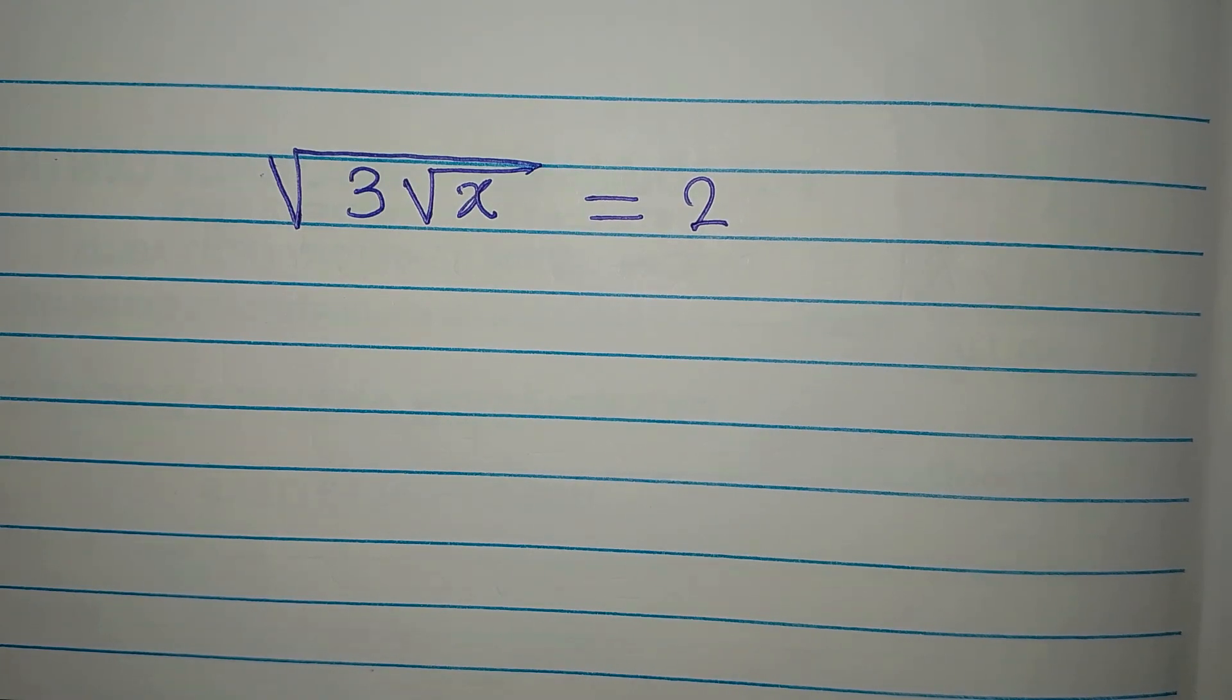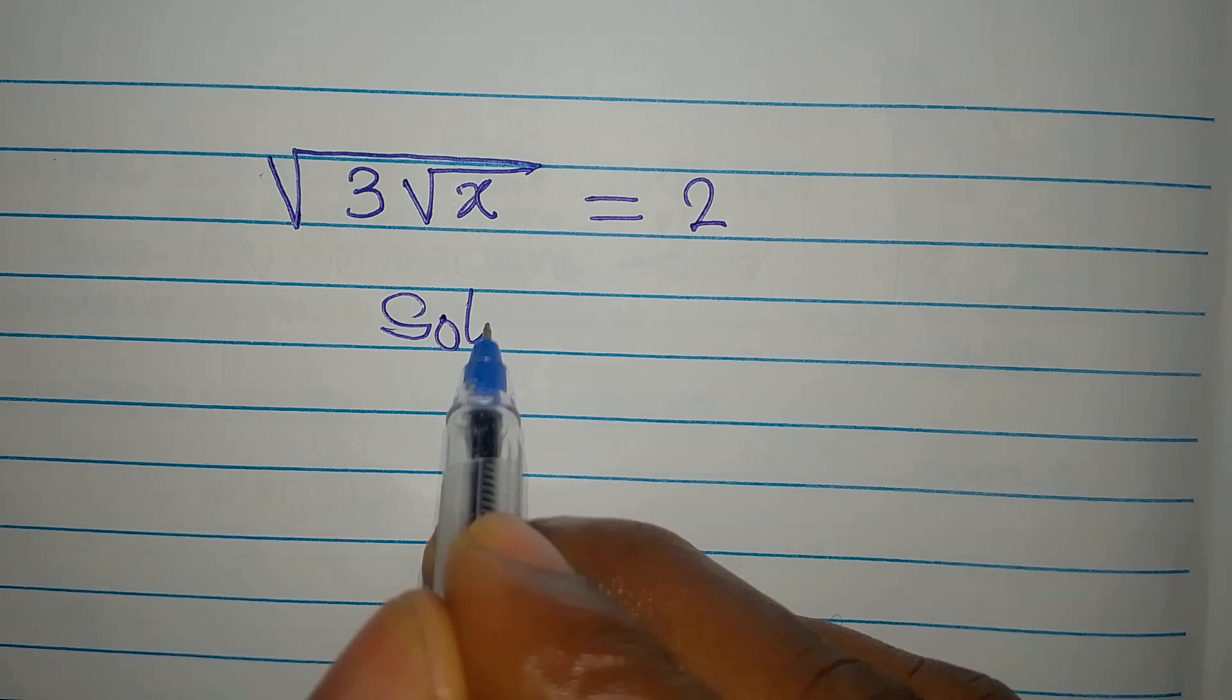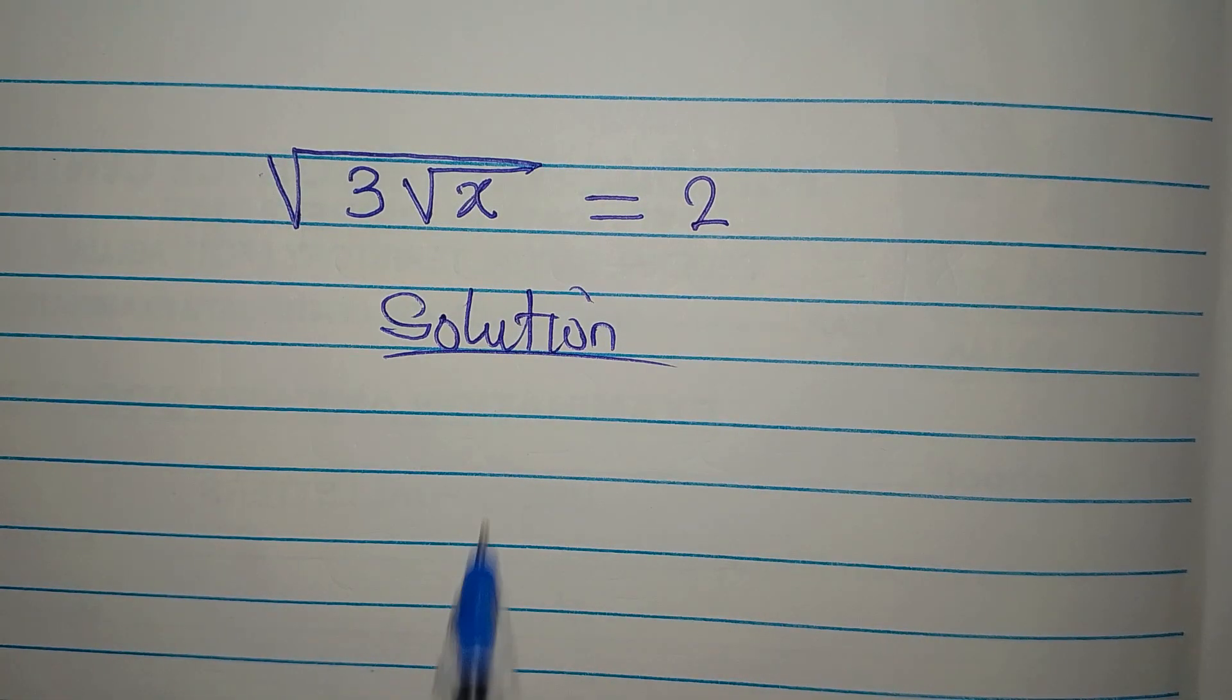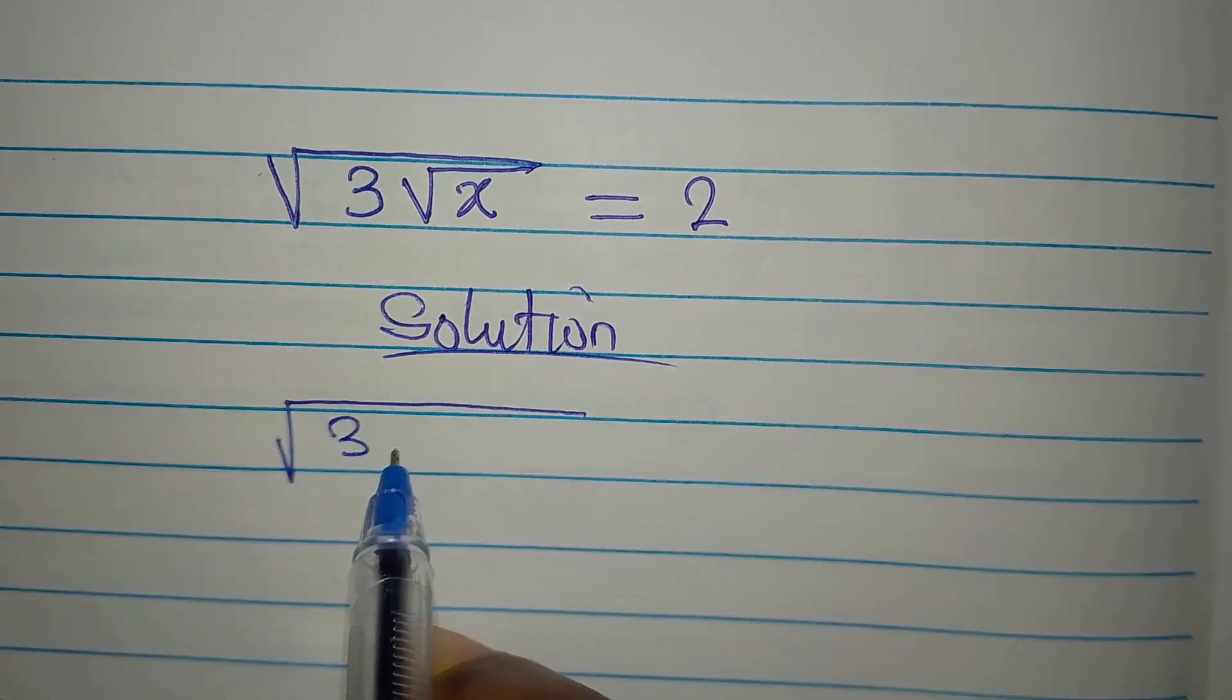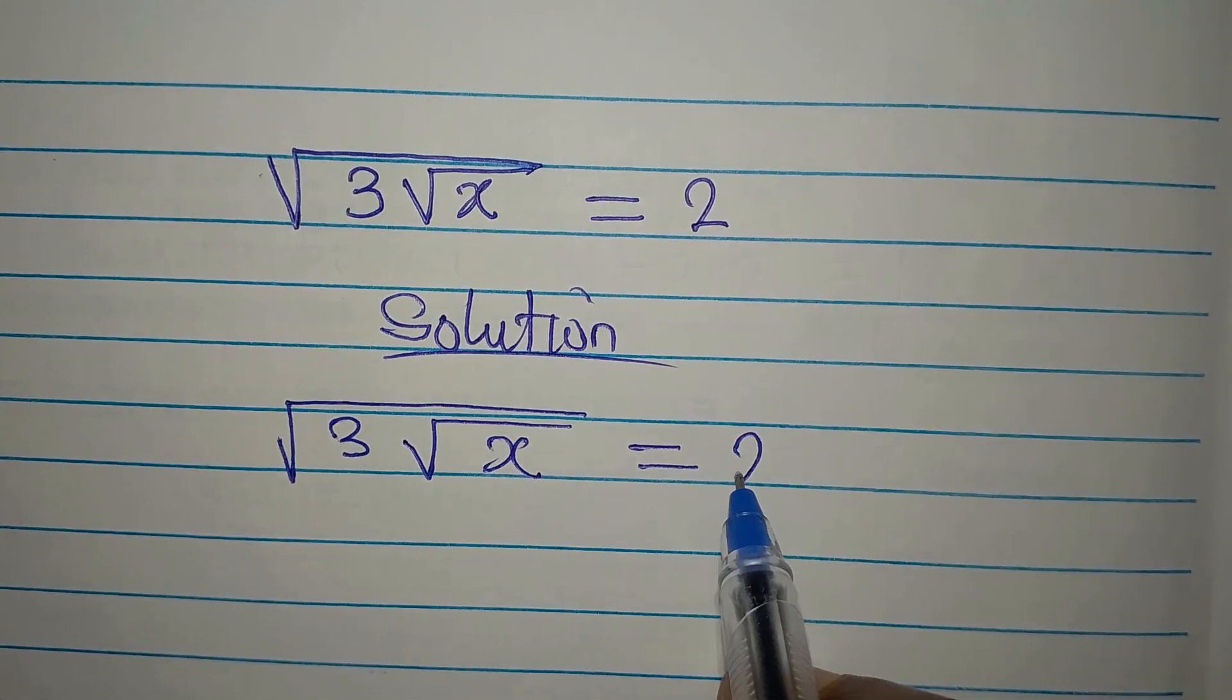Hi everyone. Let us provide a solution to this problem. We have square root of 3, square root of x equals 2.